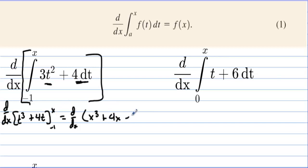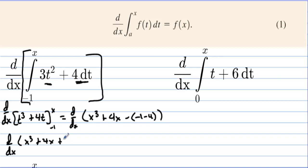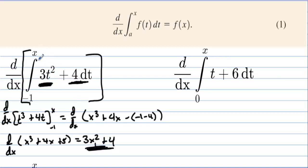And then we're going to minus — negative 1 minus 4. So negative 1 minus 4. Now we're going to take the derivative of x to the third plus 4x, and actually plus 5. And the derivative of this is 3x squared plus 4. See how you get right back to where you started? So when you take the integral and then you take the derivative, t's get replaced with x's.